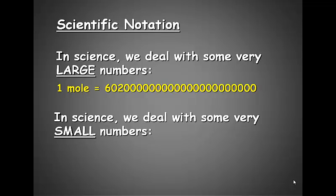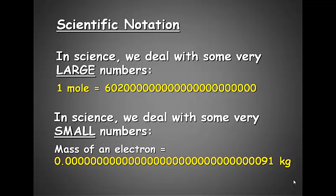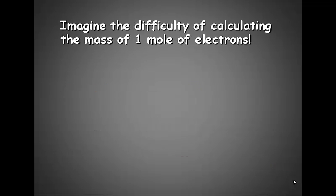We also deal with some very small numbers, like the mass of an electron. That's 31 zeros followed by 91 kilograms. Imagine how difficult it would be multiplying these two together to try to find the mass of a mole of electrons.